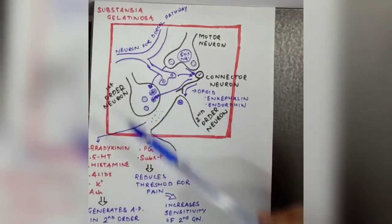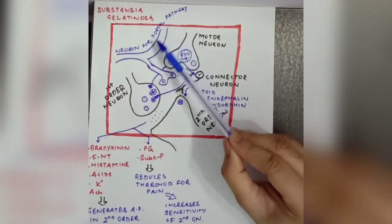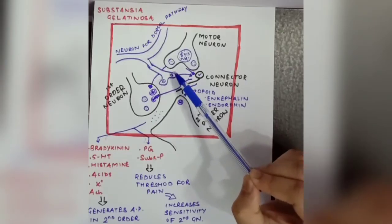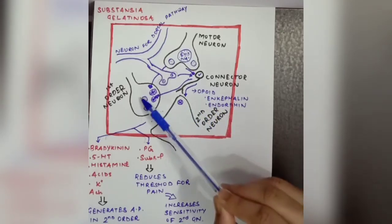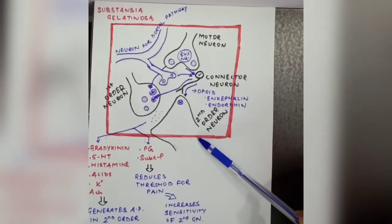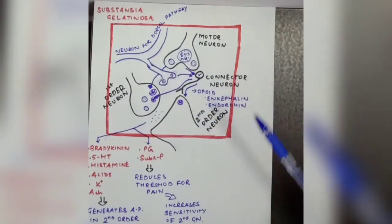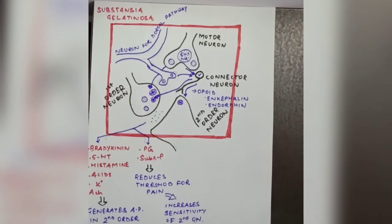Pressure and vibration sensations can stimulate certain neurotransmitters at the Substantia Gelatinosa, which connect to neurons that can reduce pain neuron transmission. In this way, our body can reduce pain through this mechanism and from different sources. This is the whole structure of the Substantia Gelatinosa, which affects neurotransmitters from other neurons — essentially describing a gate control mechanism for pain.